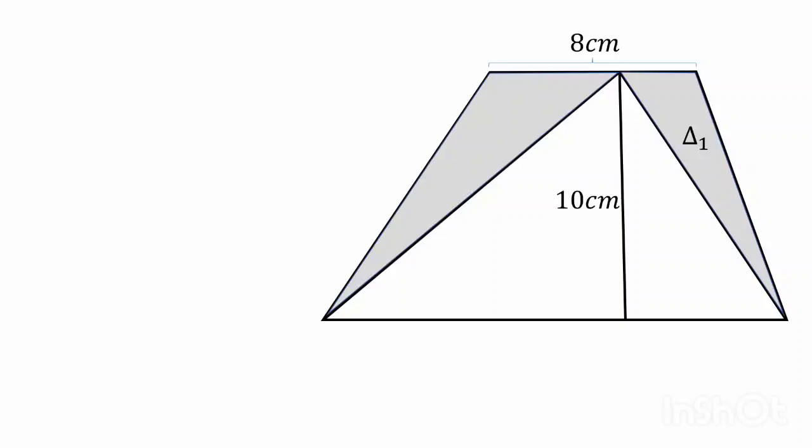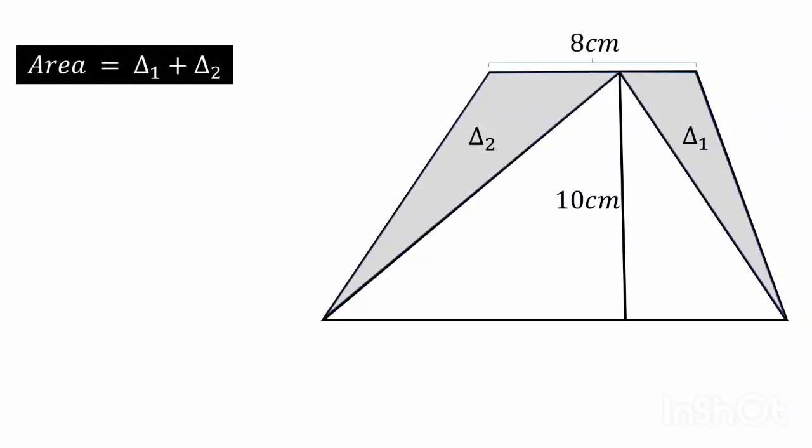Let the area of the right side triangle is del 1 and the area on the left side is del 2. So the total shaded area will be equal to del 1 plus del 2.